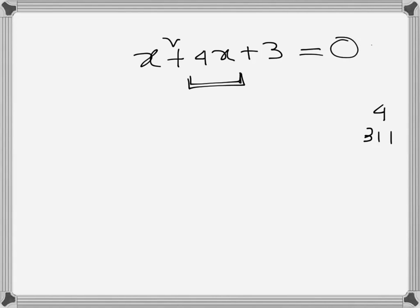So we can see if 3 plus 1 is 4 and 3 times 1 is also 3. So we have 3 here, we have x squared here. So the product is 3x squared and if we write here 3x plus x, if we multiply these two we also get 3x squared. So it should work.